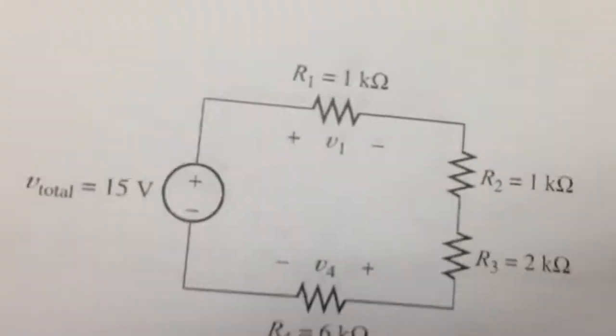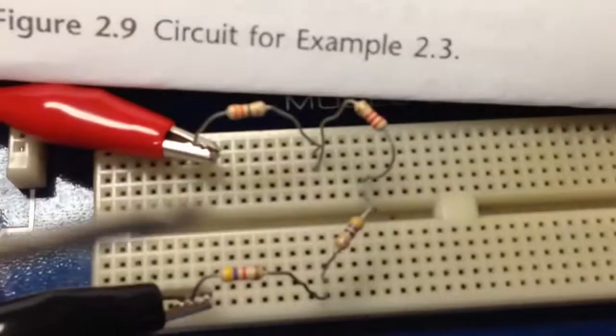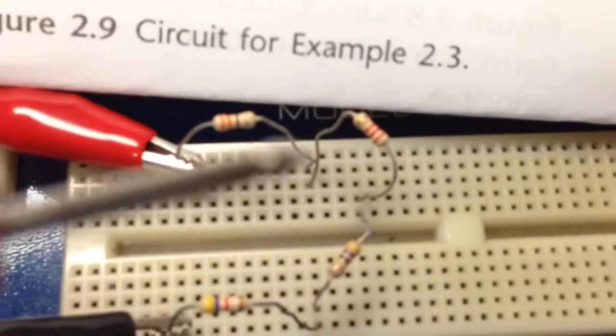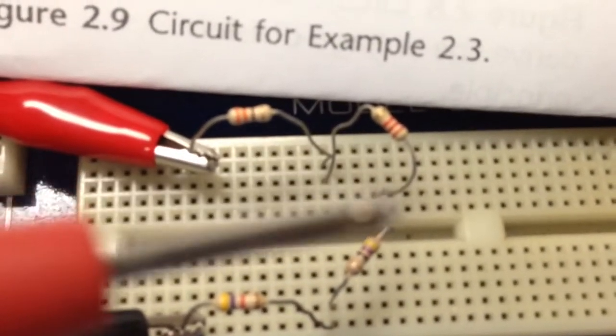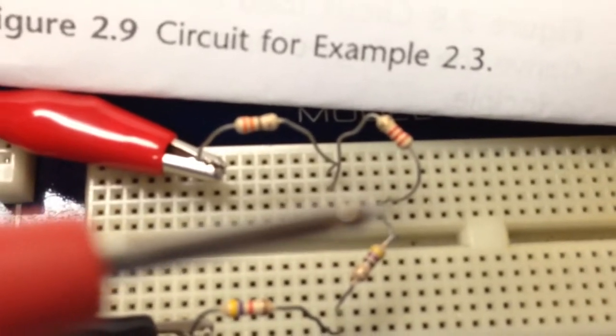I tried to make this look like the diagram. Notice that I was careful to get these two resistors connected here, but I didn't put them on the same row as these two connections.